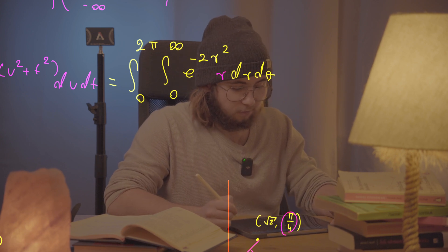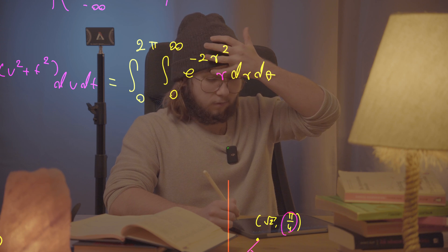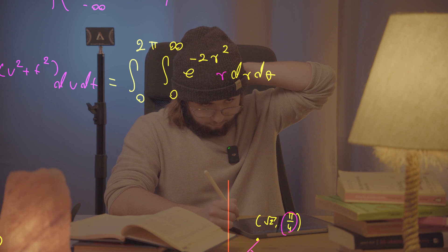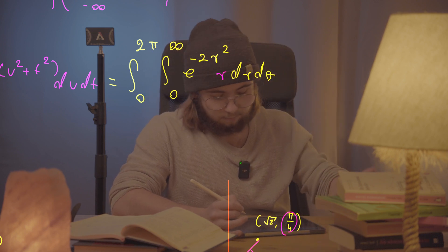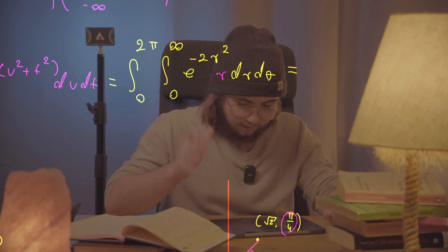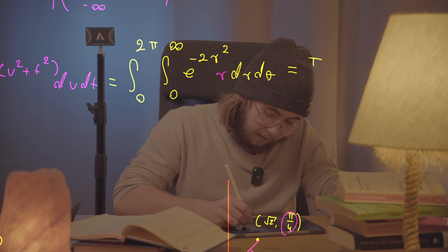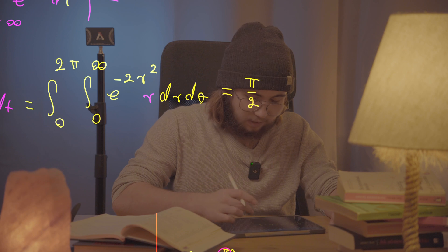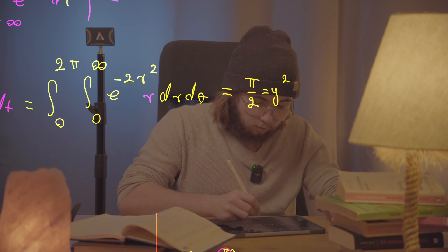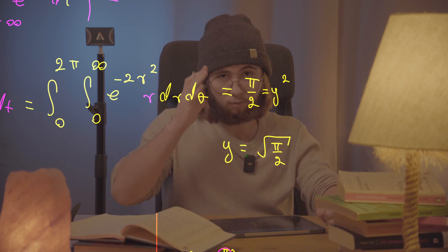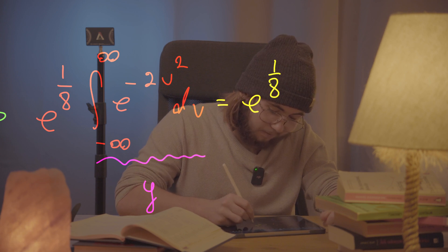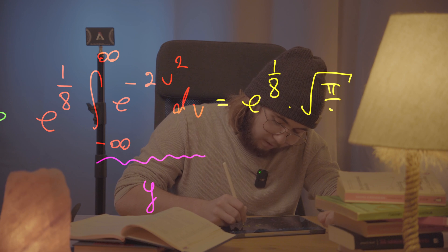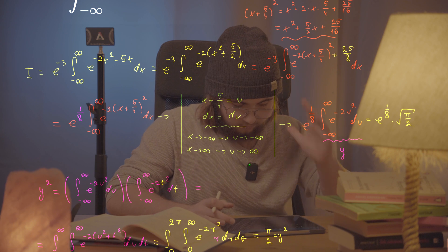The antiderivative is negative one half times e to the negative 2r squared. Plugging in the bounds and multiplying by the theta integral gives pi over 2. Since y squared equals pi over 2, y itself equals the square root of pi over 2. Therefore, our original integral I equals e to the power of 1/8 multiplied by the square root of pi over 2. Hope you guys enjoyed it — see you in the next one!